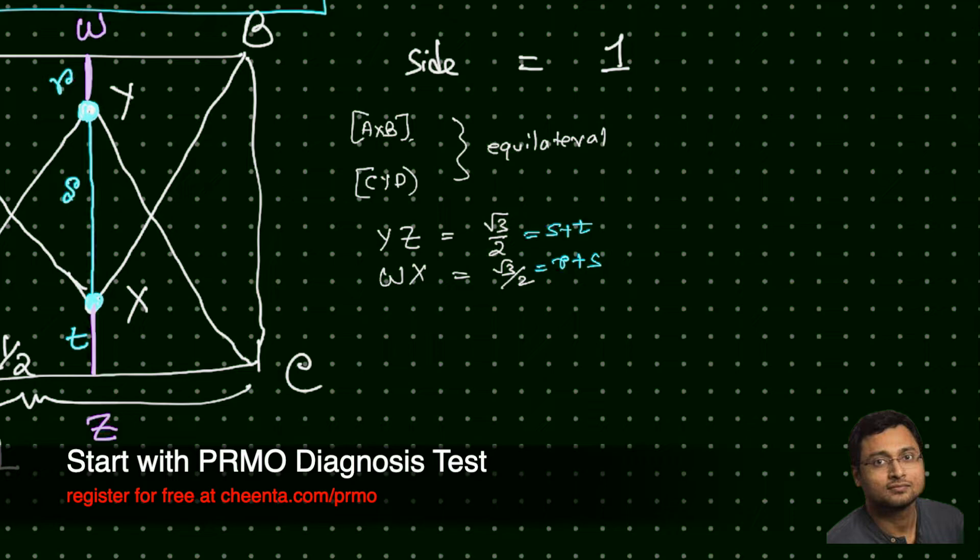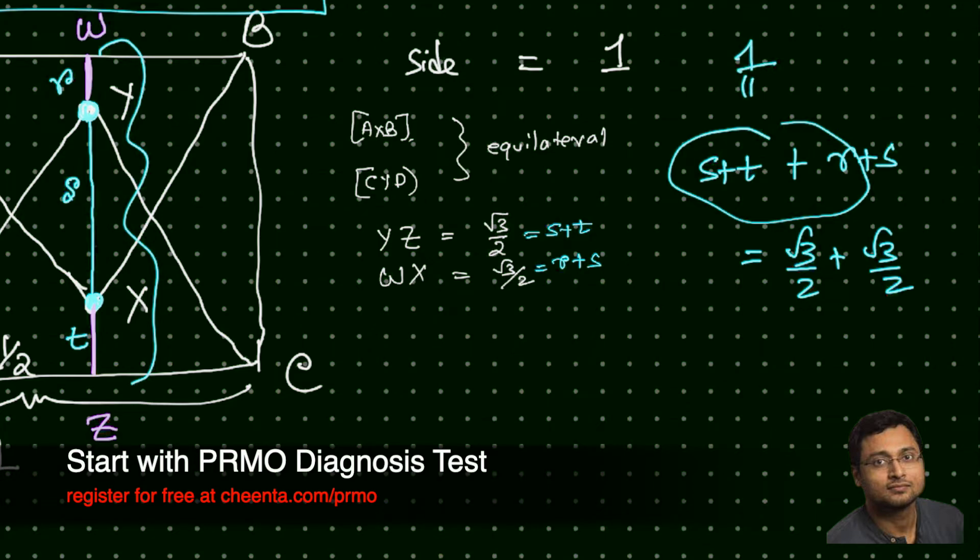So let us add this up. s plus t plus r plus s is equal to square root of 3 over 2 plus square root of 3 over 2. Now you know that s plus t plus r is this entire length which is equal to 1. So 1 plus s is equal to square root of 3. So s is equal to root 3 minus 1.